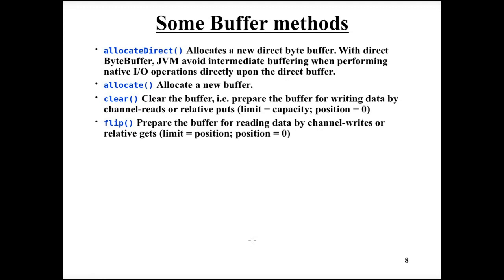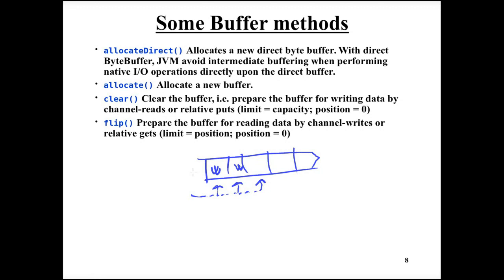When writing, position starts at index zero and advances as data is written. When it's time to flip and start reading, limit is set to the current position value, and position is reset to zero. So when reading, we read at position zero, advance to position one, and stop at the limit. This guarantees we do not read anything that was not written.